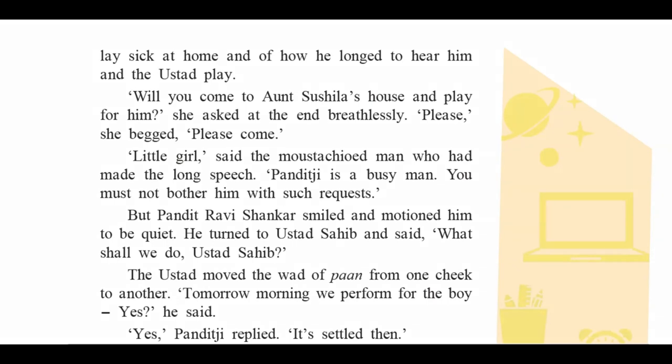'Will you come to Aunt Sushila's house and play for him?' she asked breathlessly. 'Please,' she begged. 'Please come.' This shows the love of sister for her brother Anant. Smita directly said: 'Will you come to Aunt Sushila's house and play for my brother?'